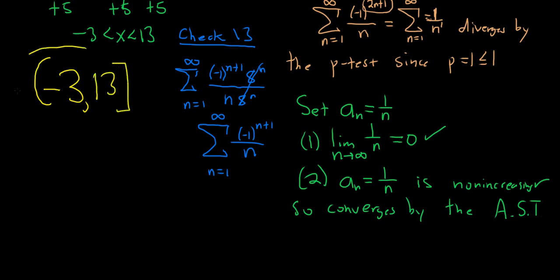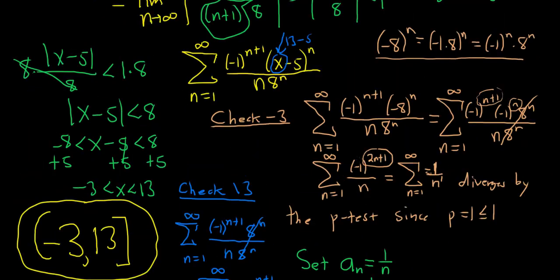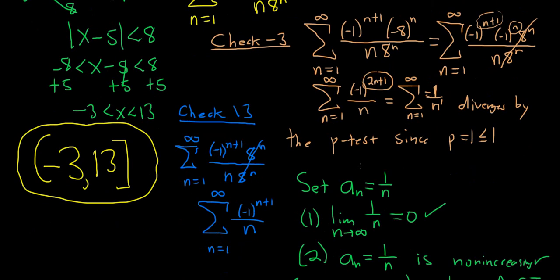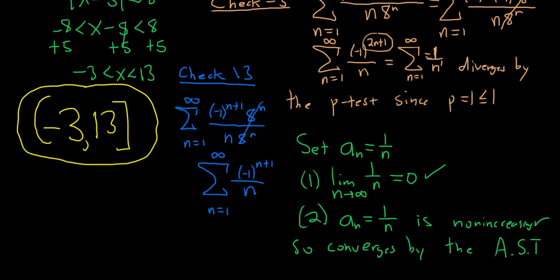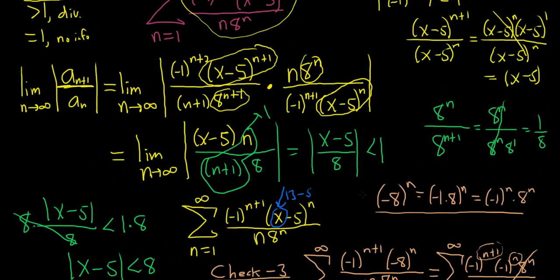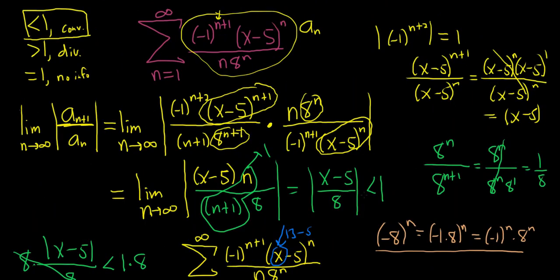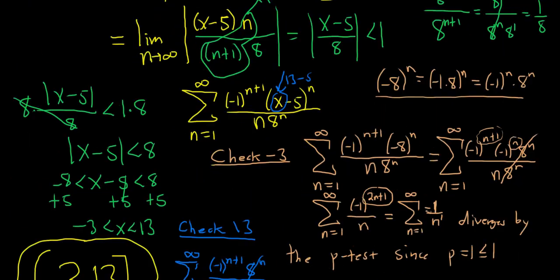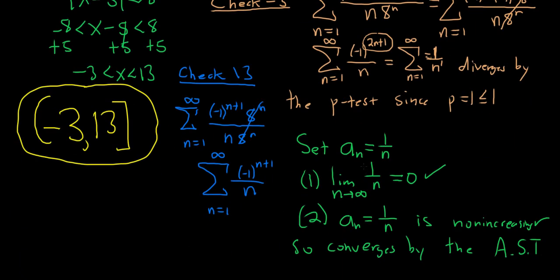This is a nice problem because you have convergence at one endpoint and divergence at the other. We used the p-test and the alternating series test. So the final interval of convergence is (negative 3, 13]. I hope this video has been helpful to anyone trying to learn infinite series and calculus. Good luck.